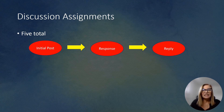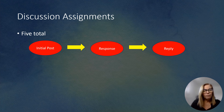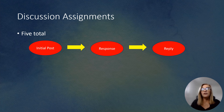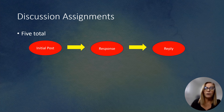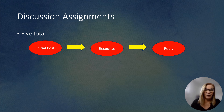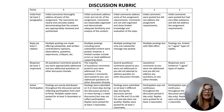Discussion assignments — there are five total. You're going to have an initial post, then you're going to respond to at least two students' posts, and then you're going to reply to responses on your post. If nobody has responded to your initial post, you'll be replying to at least two other responses people have made on other posts. We'll go into more detail in your first discussion assignment, and you will have a discussion rubric so you'll understand what's expected.